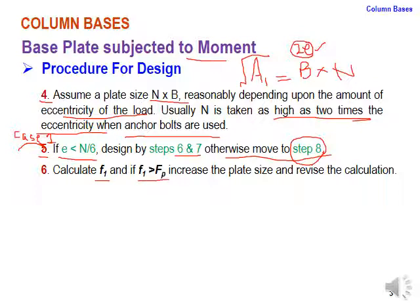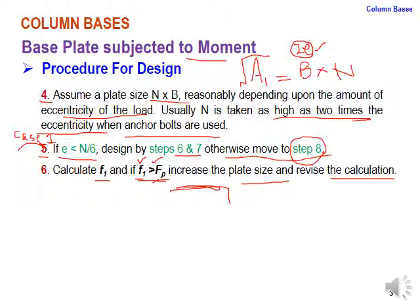For Case 1 (e < N/6), calculate f1 (bearing stress). If f1 > fp, increase the plate size and revise the calculation. The concrete bearing strength fp must be greater than the applied bearing stress f1 under the base plate; otherwise, revise the plate dimensions.